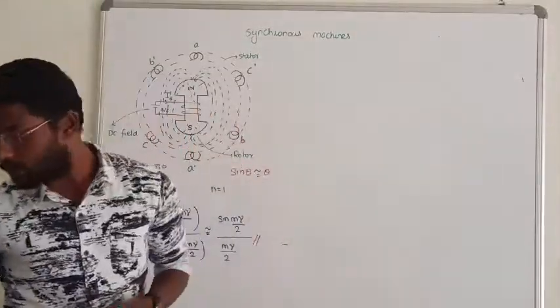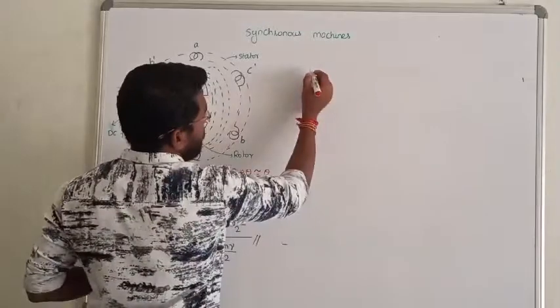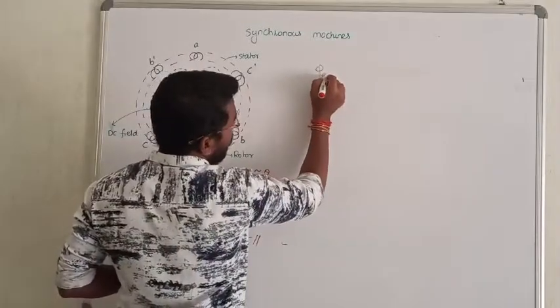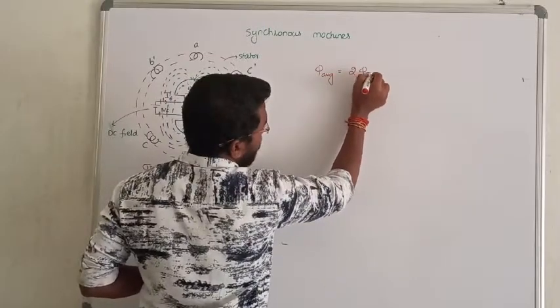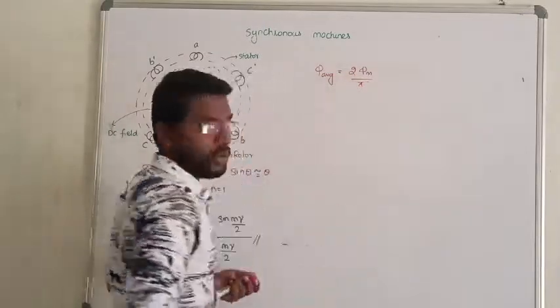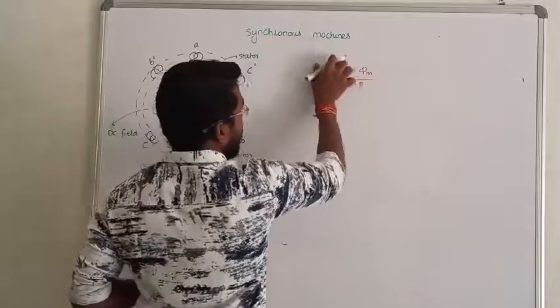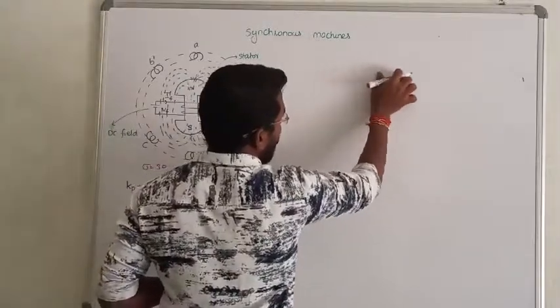That's very simple. When calculating the average value of flux, the average flux becomes 2 times phi_max divided by pi. Or we can start from average flux density.